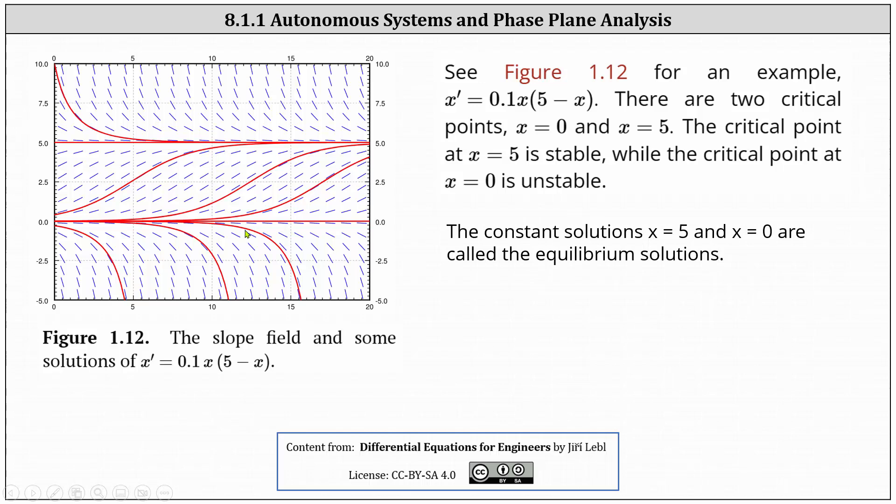The critical point at x = 5 is stable, while the critical point at x = 0 is unstable.